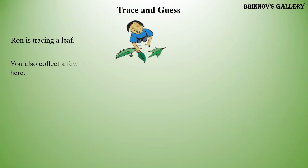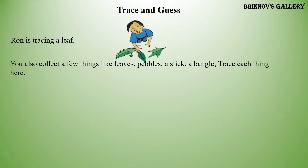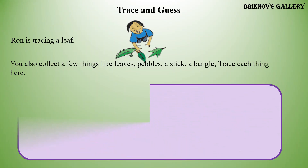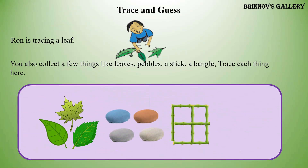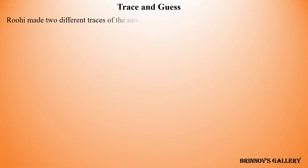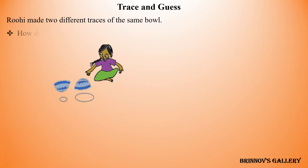Trace and guess: Ron is tracing a leaf. You also collect a few things like leaves, pebbles, a stick, a bangle — trace each thing here. Ruhi made two different traces of the same bowl. How did Ruhi keep the bowl to get two different traces from it?